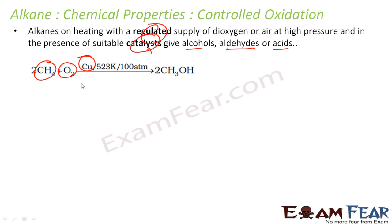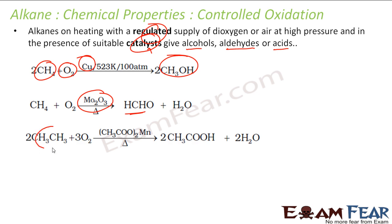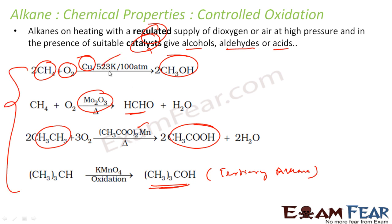In controlled oxidation, we have a regular supply of oxygen and we use some catalyst. With different catalysts we get sometimes alcohol, sometimes aldehyde, or we get acid. For example, methane heated with oxygen and a copper catalyst gives methanol. With a different catalyst such as M₂O₃ you get aldehyde. With ethane heated with oxygen and another catalyst you get ethanoic acid.